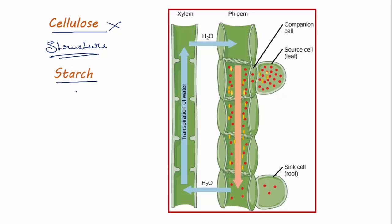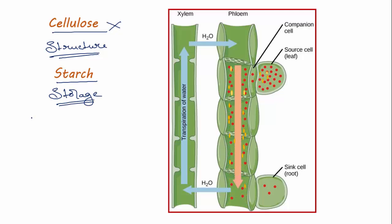Starch is a dietary sugar, but starch is used by plants as a storage sugar. The food produced during photosynthesis is stored in plants as starch in different parts of the plant body. Hence, it is not used for translocation immediately, so starch is also the wrong answer.